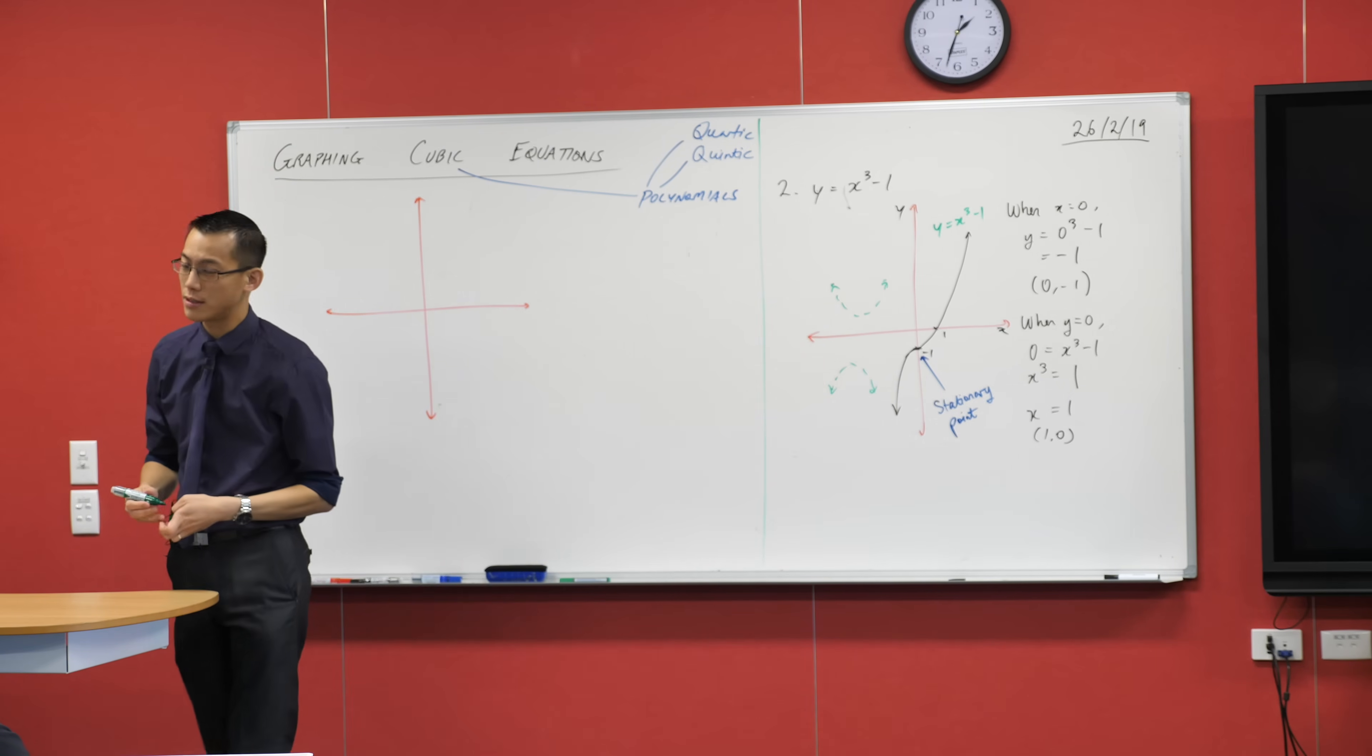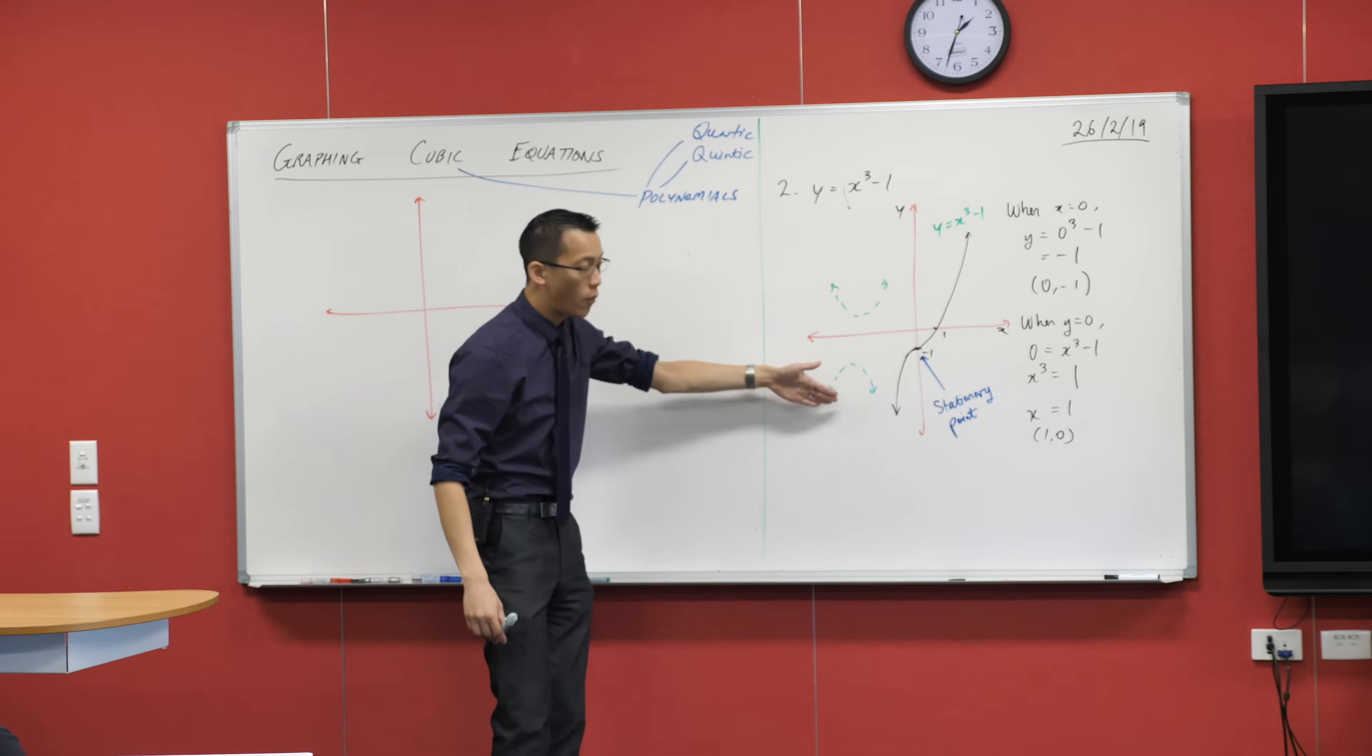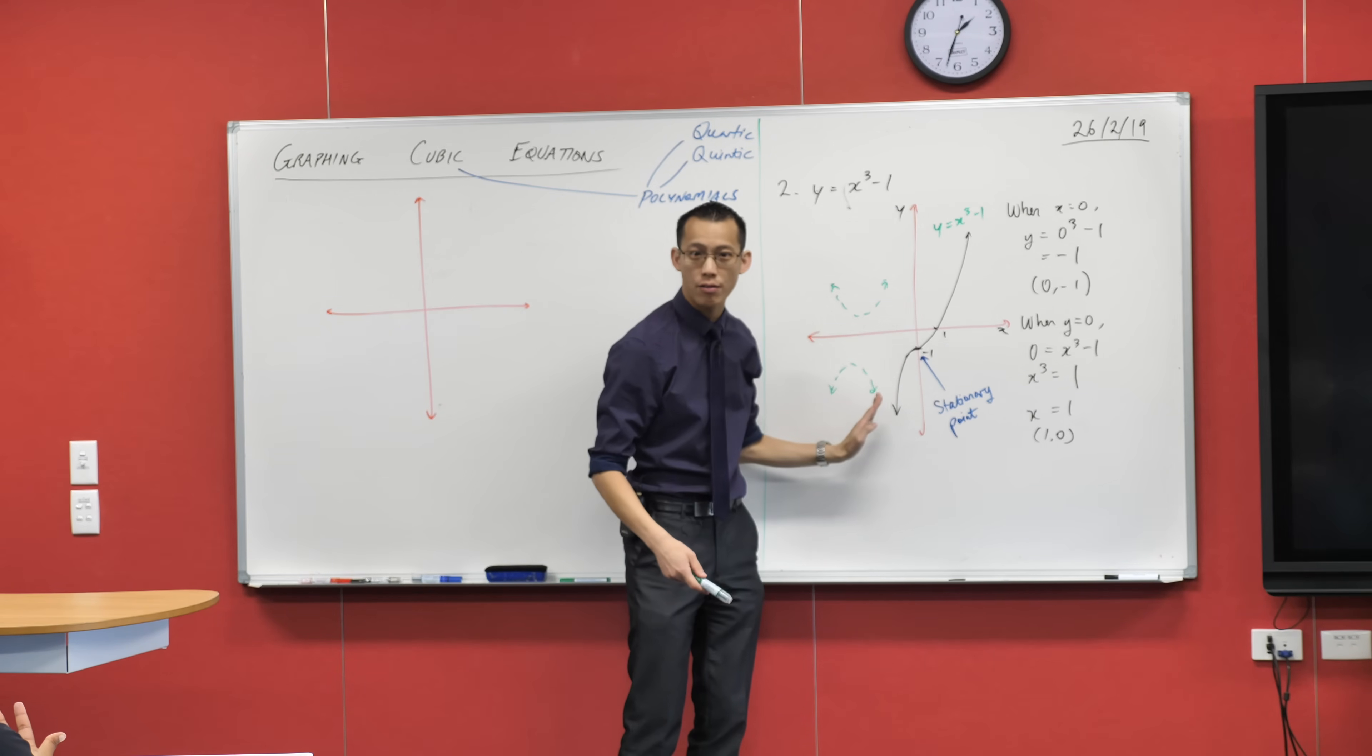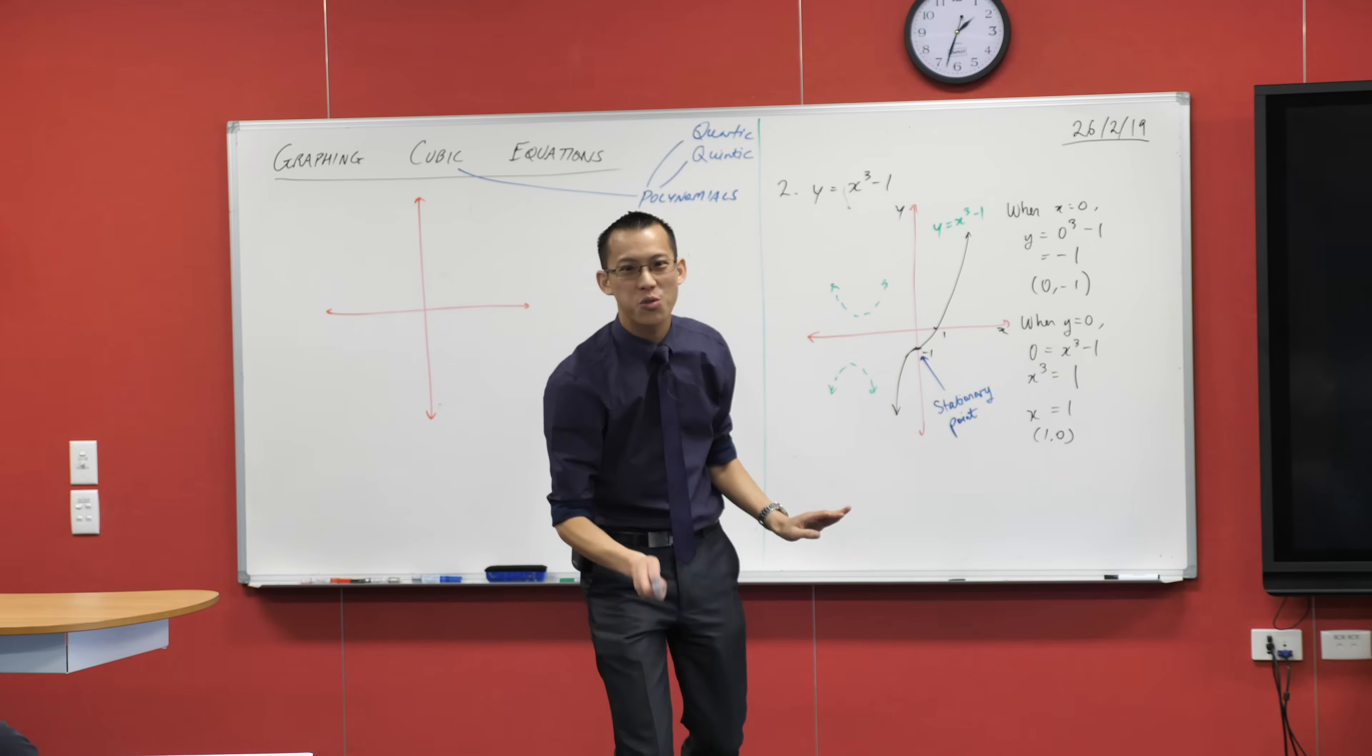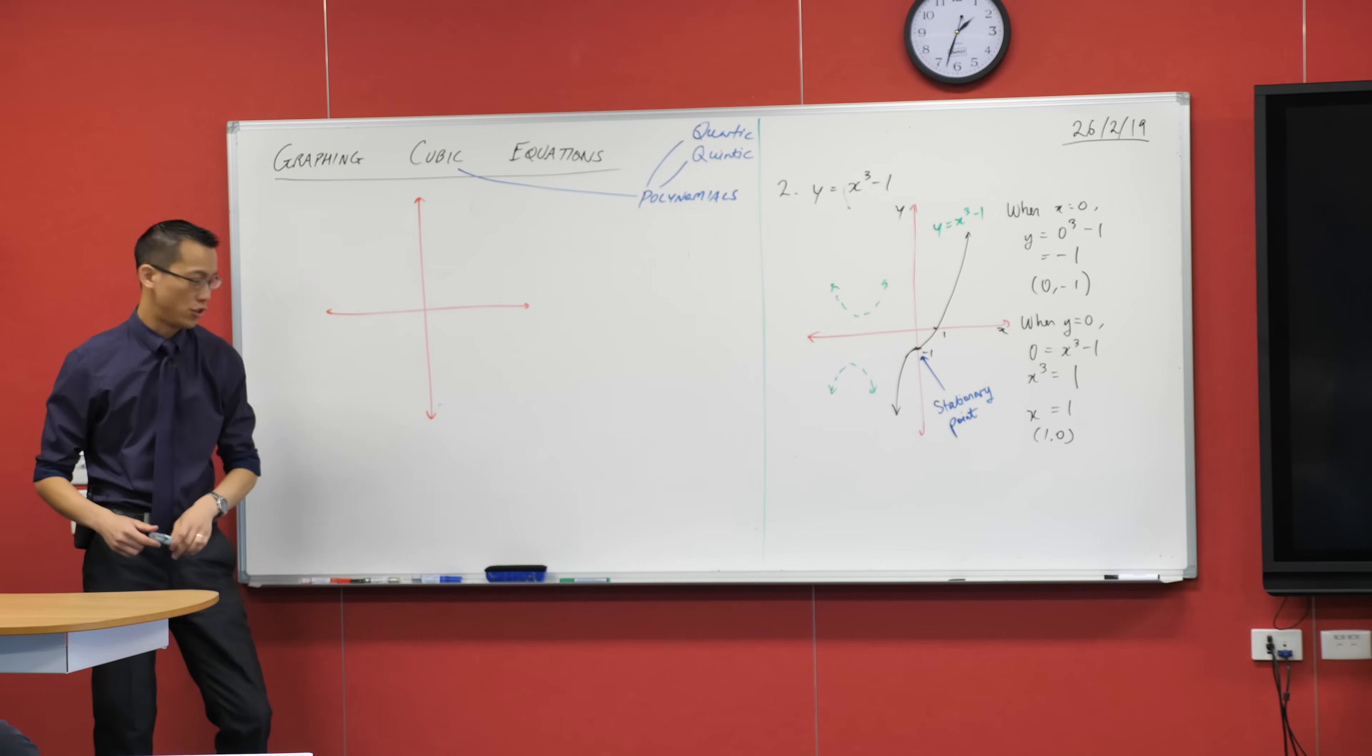But cubics can't do this. Did you notice that? Cubics can't possibly be always above or always below. Cubics will always go sort of between both, right? And therefore they must always cross. They must always cross every single time. So you will always get an x-intercept and y-intercept for cubic.